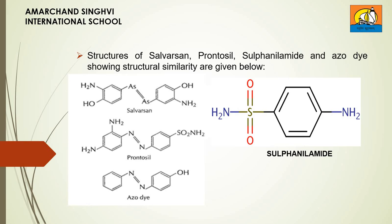Structures of Salvarsan, prontosil, sulfanilamide and azodide showing structural similarity are given below. You can see that in Salvarsan, there is an arsenic double bond arsenic linkage present, whereas in prontosil there is a nitrogen double bond nitrogen linkage present, and in azodide also there is a nitrogen double bond nitrogen linkage present. You can also see the structure of sulfanilamide. Note that the structures of Salvarsan and prontosil are not the same, but we are talking about the specific linkage — the two atoms linked through a double bond.